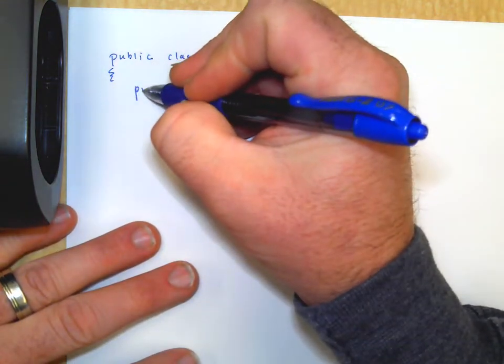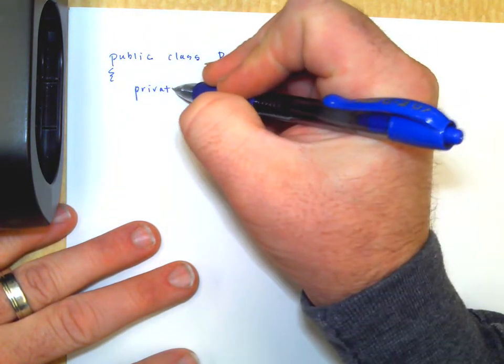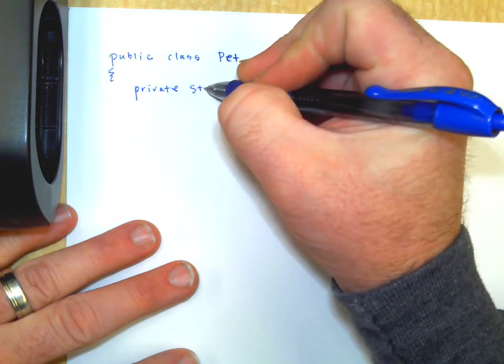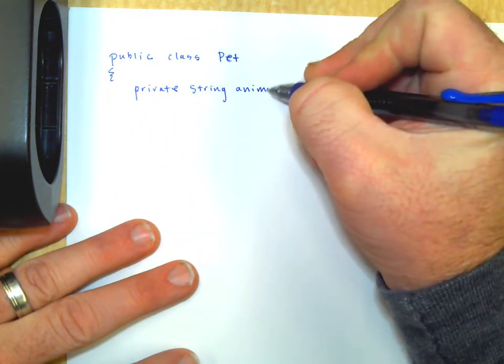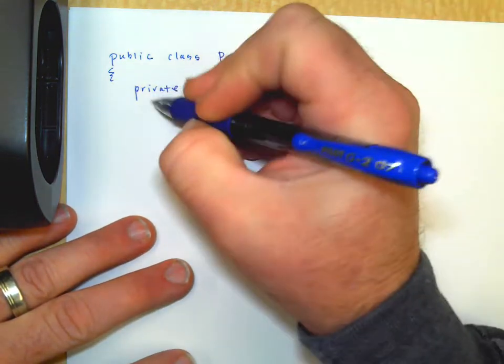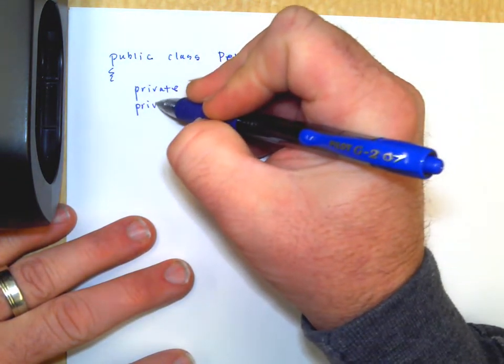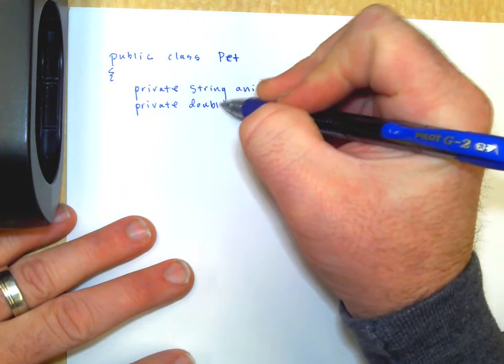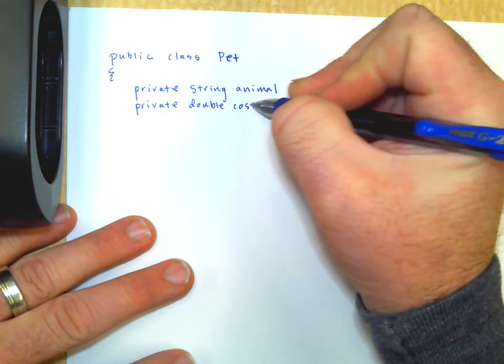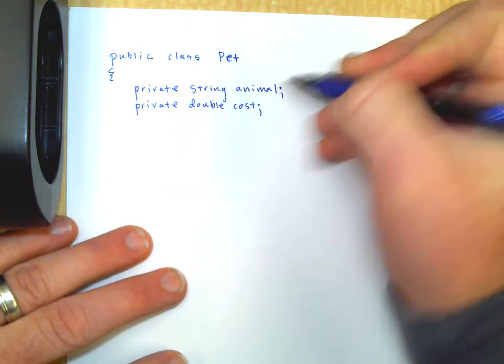So we're going to have private instance variables. So for our pets, they're going to have a string that is the type of animal, you know, cat, dog, hyena, whatever. And then we'll have another one that's private double cost. So of course, you got to make sure they're private.